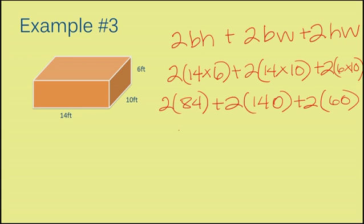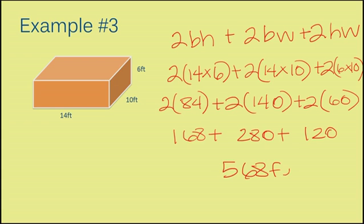Now, I'm going to multiply my 2 times my number inside the parentheses. 2 times 84 is 186, plus 280, plus 120. When I add 168 plus 280 plus 120, I get 568 feet squared.